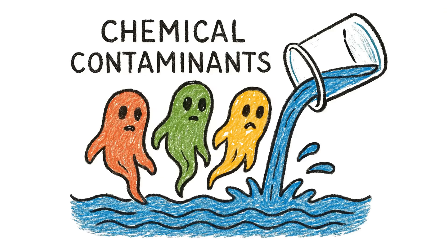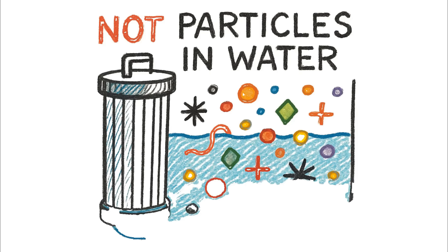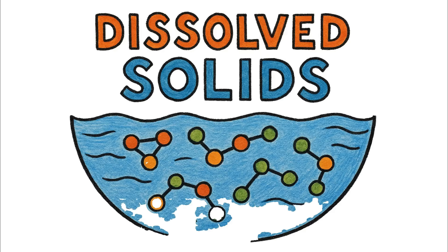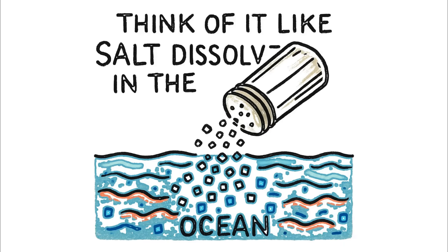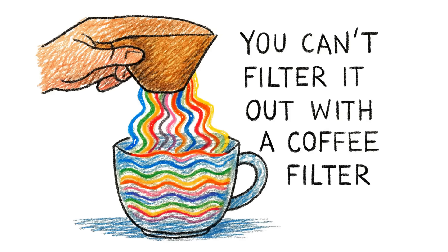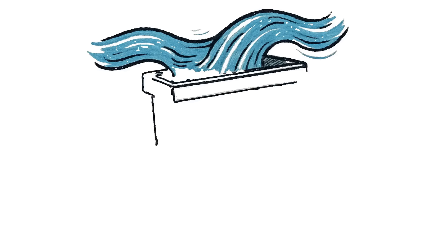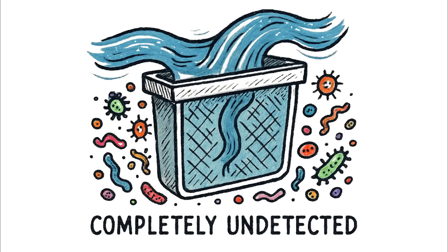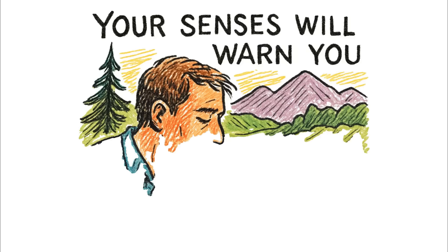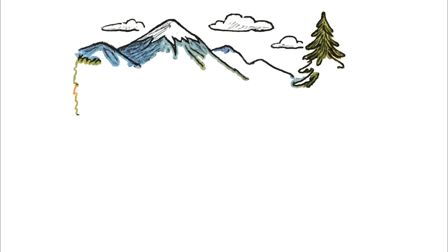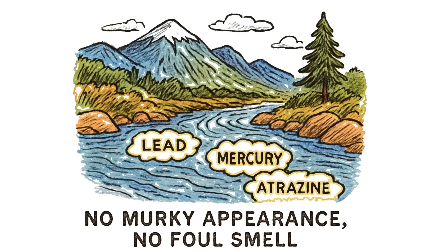These are the chemical contaminants: the heavy metals from industry, the pesticides from agriculture. These aren't particles floating in the water that a filter can catch — they are dissolved solids. On a molecular level, they have become one with the water. Think of it like salt dissolved in the ocean; you can't filter it out with a coffee filter. The chemicals aren't in the water — they are the water. They flow where it flows, they pass through every pore your filter has, completely undetected. This is a phantom menace. A clear, cold mountain stream can be a toxic soup. Your senses will not warn you. There is no murky appearance, no foul smell to alert you to the lead, mercury, or atrazine you're about to put in your body.